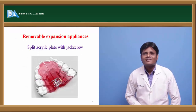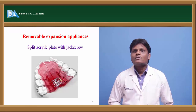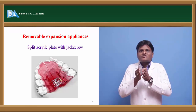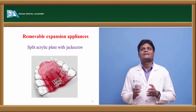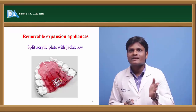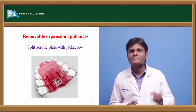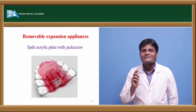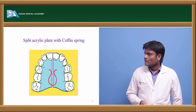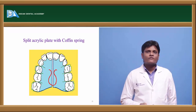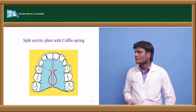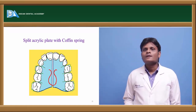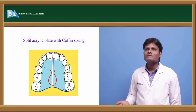The split acrylic plate with a jack screw: by sequential activation of the jack screw, the two halves of the acrylic plate move outward, pushing the maxillary teeth apart. Most of the time, the expansion achieved with a split acrylic plate is a dental type, not a skeletal type. Another option is a split acrylic plate with a coffin spring, activated by opening up the omega or coffin spring placed in the middle of the expansion plate.